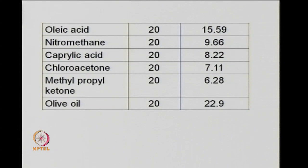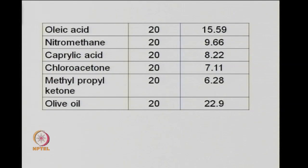Oleic acid at 20°C has an interfacial tension of 15.59 dynes per centimeter. Its relatively low value is due to two reasons: first, the presence of a double bond in the oleic acid molecule; and second, there is a hydroxyl group associated with it. The combined action of the hydroxyl group and the double bond is the reason for its low interfacial tension. In general, as we increase temperature, interfacial tension decreases, just like surface tension.